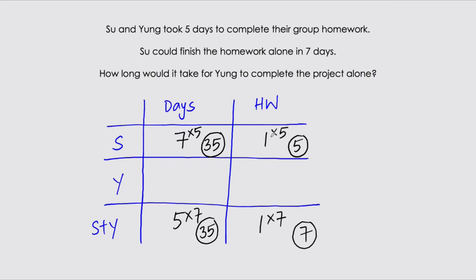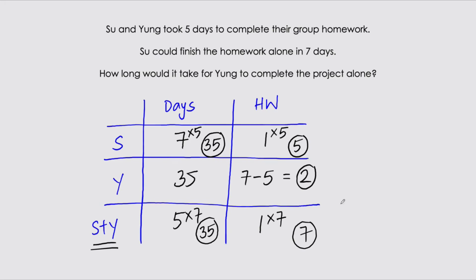In this case, we're not adding these together because the combined total is already given. With 35 days as the fixed time, Yang would complete seven minus five, which equals two homework. So in 35 days, Yang can finish two homework. Dividing by two on both sides gives us 17.5 days — Yang needs 17 and a half days to complete her homework on her own. This is similar to the previous question, but here we have the total value first, so we use subtraction instead of addition.